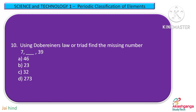Question 10. Using Dobereiner's law or triad, find the missing number. 7 and 39 are given and we have to find the middle element or the middle number. Option A: 46, Option B: 23, Option C: 32, and Option D: 273.